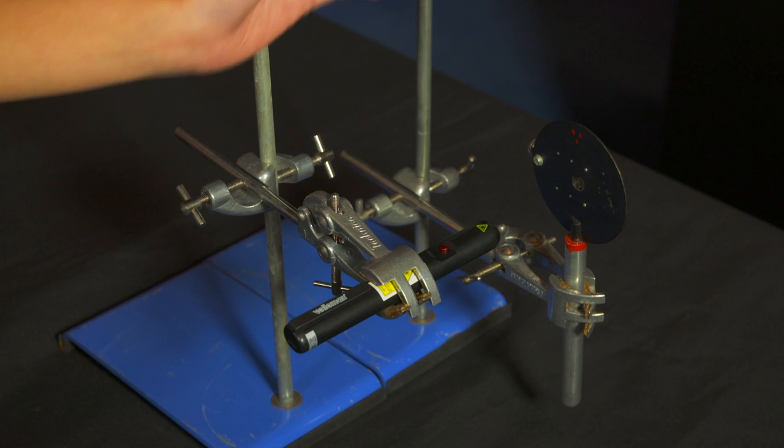He used a double slit and a light source. Here, I have a single slit. When I shine a laser through it, the light is diffracted. The light spreads out as it passes through the slit, creating one bright spot in the centre and dimmer spots to the side.